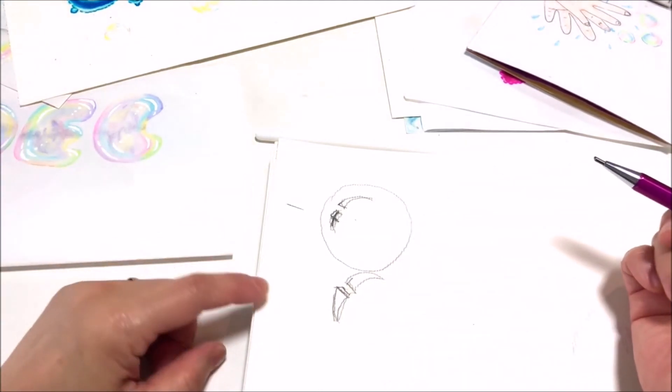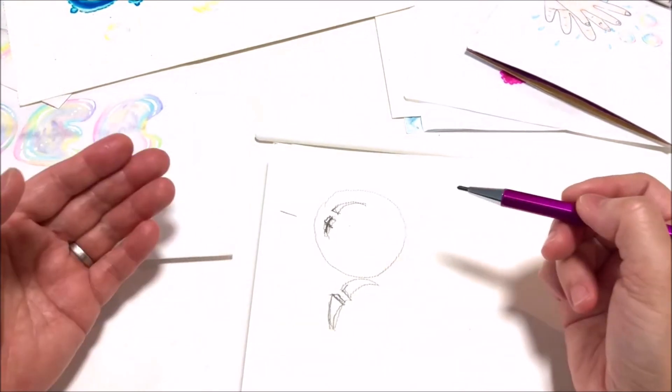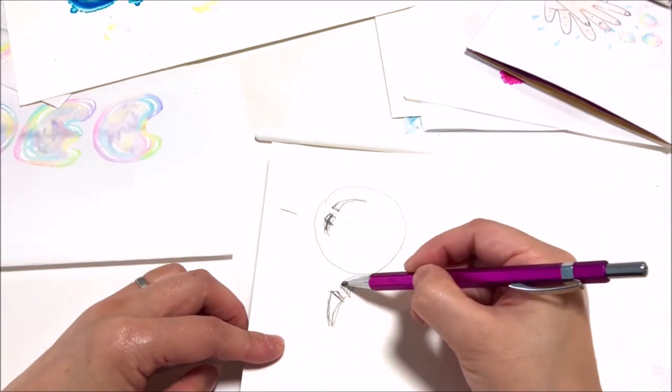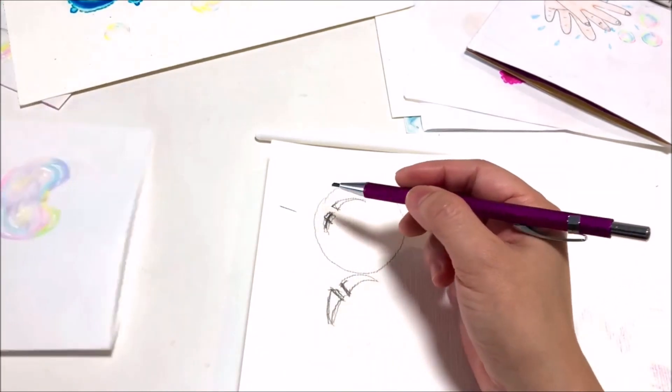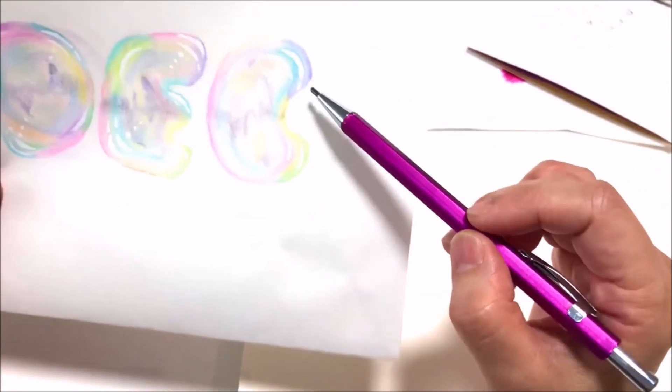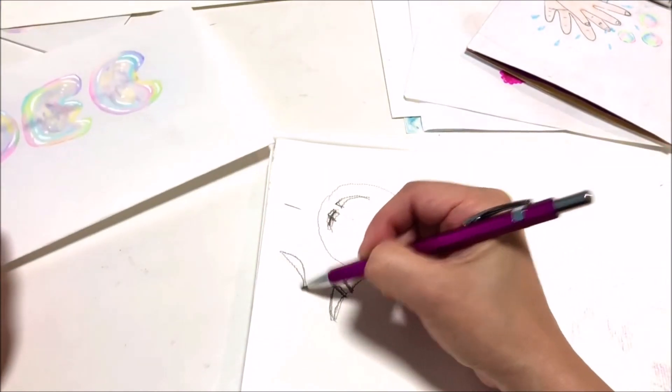And as I said just now, usually you see bubbles outdoors, right? When you play in the park. So it should not be very sharp. So in here you see that I only draw the highlights like this.